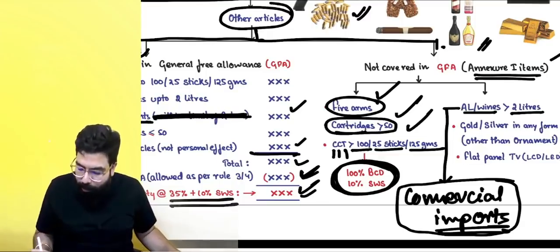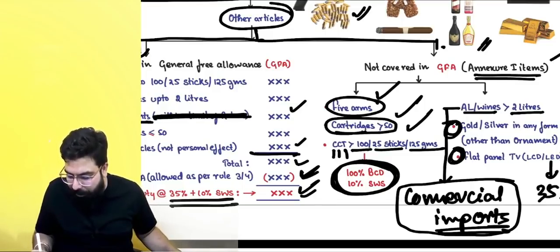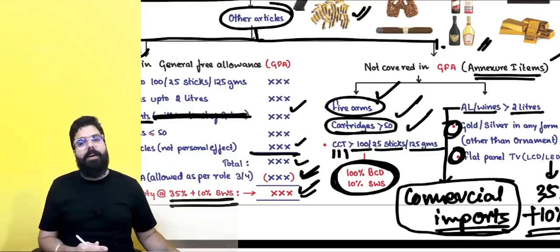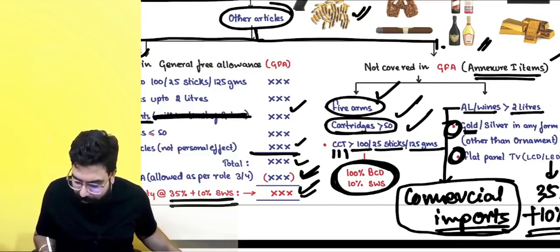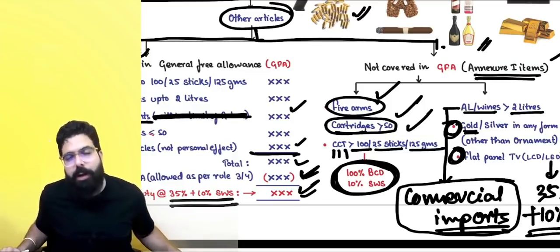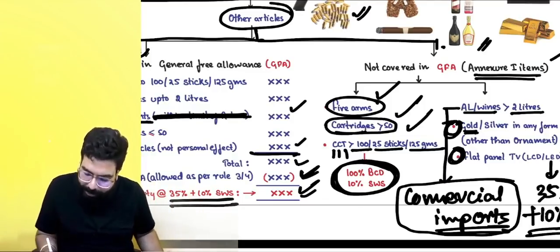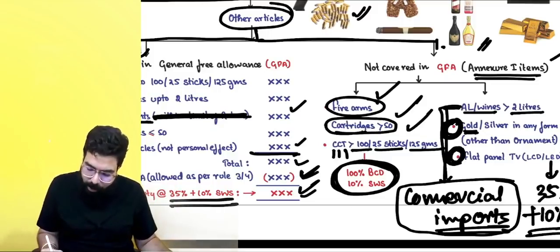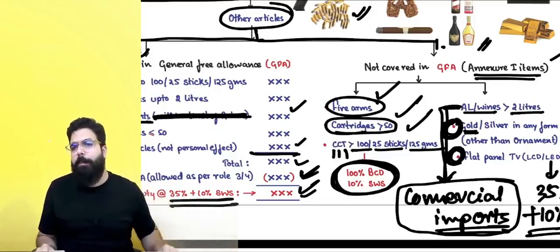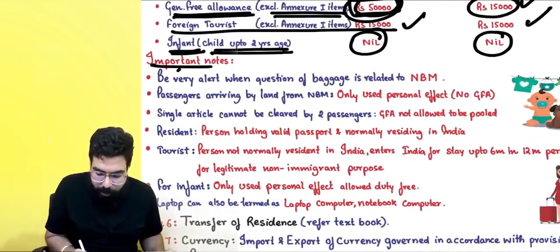For gold, silver, or flat panel TVs classified as extra items, the rate is 35% + 10% social welfare surcharge. Gold in pure form imported through baggage is actually not supposed to be cleared under baggage rules, but for exam purposes, gold, silver, and flat panel TVs attract 35% + 10% SWS. Alcoholic liquor exceeding 2 liters is treated as commercial imports only.